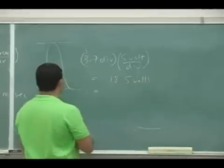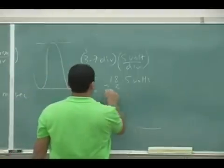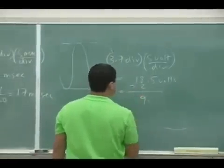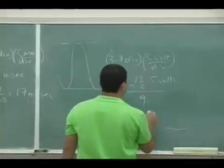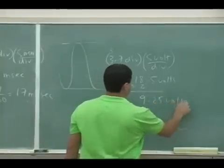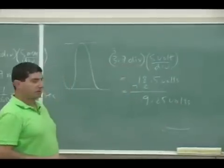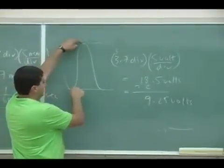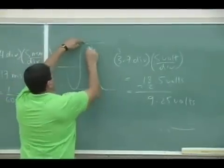Now divide that by two. Nine point two five. Right, so from the bottom to the top was eighteen and a half volts divided by two gives you the amplitude of the voltage.